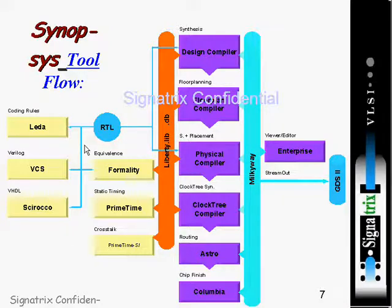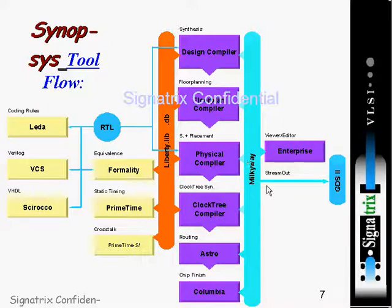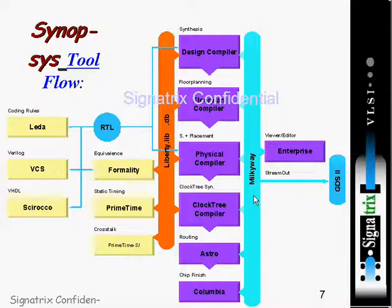Formality is the formal verification tool from Synopsys. Milky Way — shown here in green — is a database from Synopsys. It contains macros and the design's own IPs.